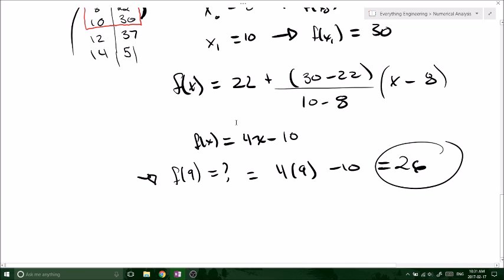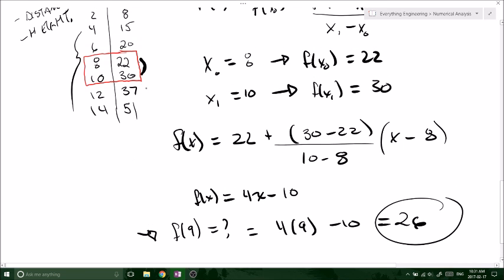Now just double check, see if this makes sense. Looking back at our data points, we have our f of x naught is 22, and then our f of x1 is 30. So our f of x at 9 is somewhere in between at 26. So that does make sense.